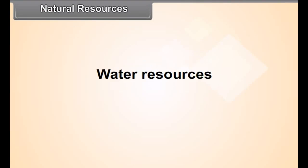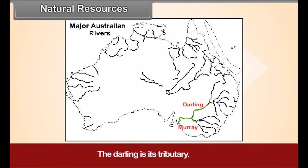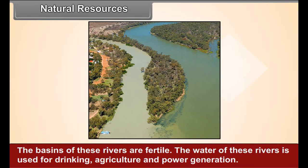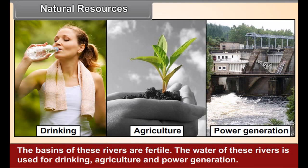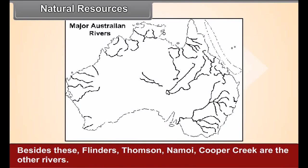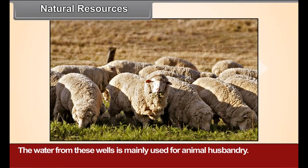Natural resources — water resources: The Murray is the major river in the southeastern part of the continent. The Darling is its tributary, and the basins of these rivers are fertile. The water of these rivers is used for drinking, agriculture, and power generation. Besides these, the Flinders, Thompson, Namoi, and Cooper Creek are other rivers. Distinctive artesian wells are seen in the central low-lying plains, and the water from these wells is mainly used for animal husbandry. Scarcity of water is the main problem in the hot deserts to the west.